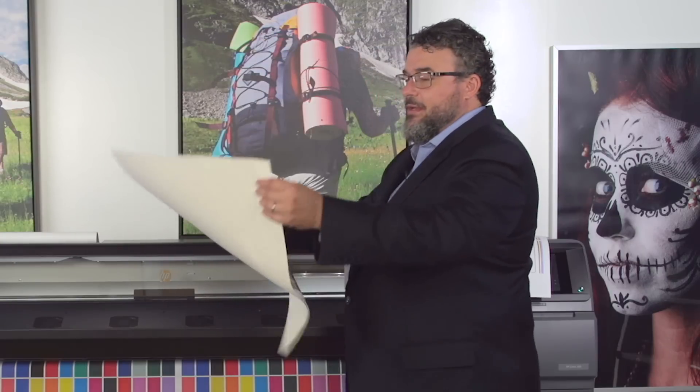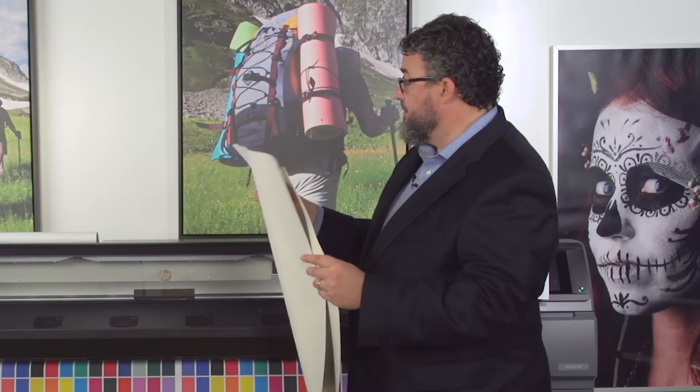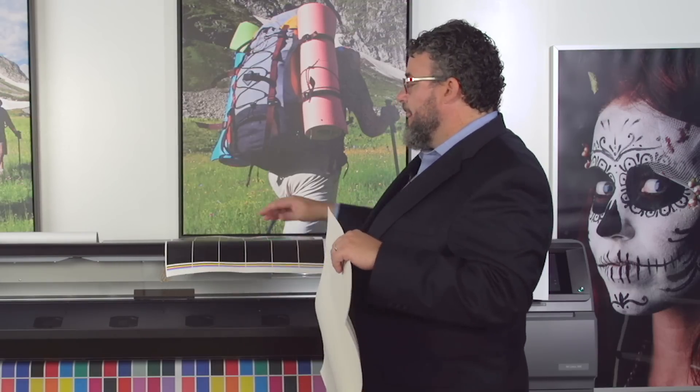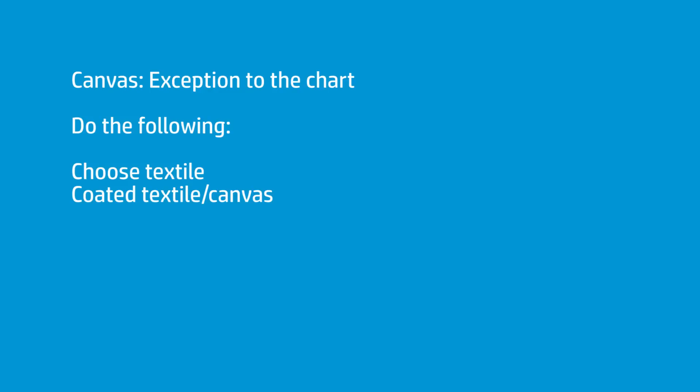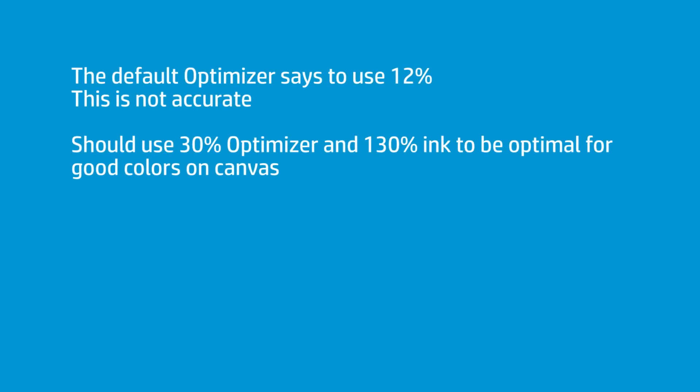Here's another chart of the exact same thing, but this one is on canvas. The reason I brought this up is because there's one area in the printer where the settings are not quite right. Generally speaking, you can load a material, choose a category, and it will get the right Optimizer for you. The only questionable one is if you choose canvas — the recommended path is to go into Textile, specifically Coated Textile and Canvas. If you choose that category, the default Optimizer number will be 12, which in my opinion is too low for canvas.